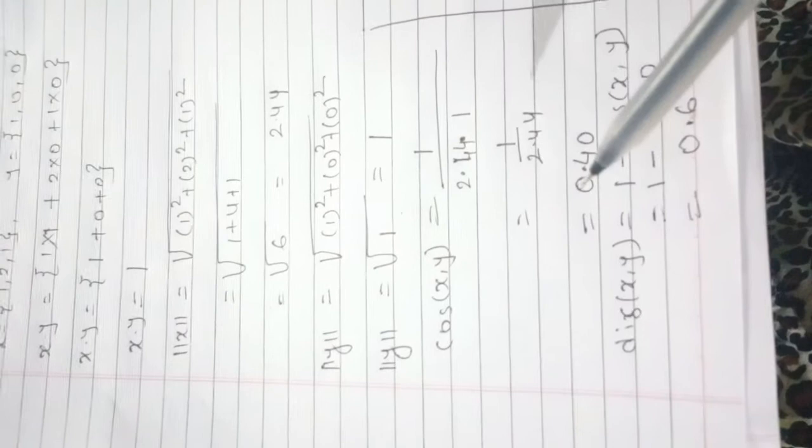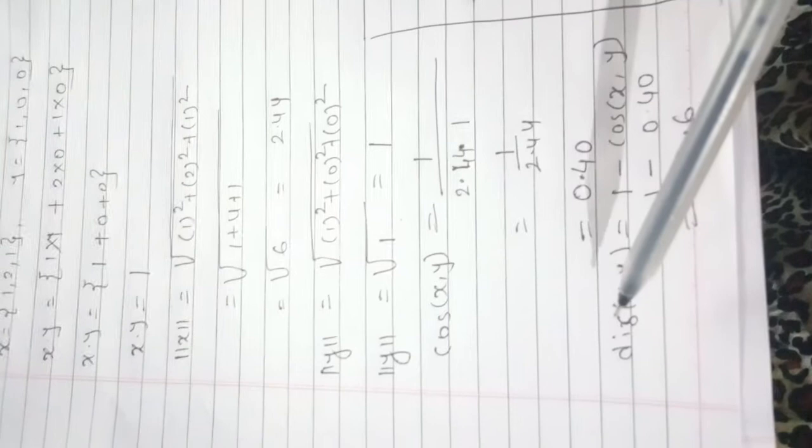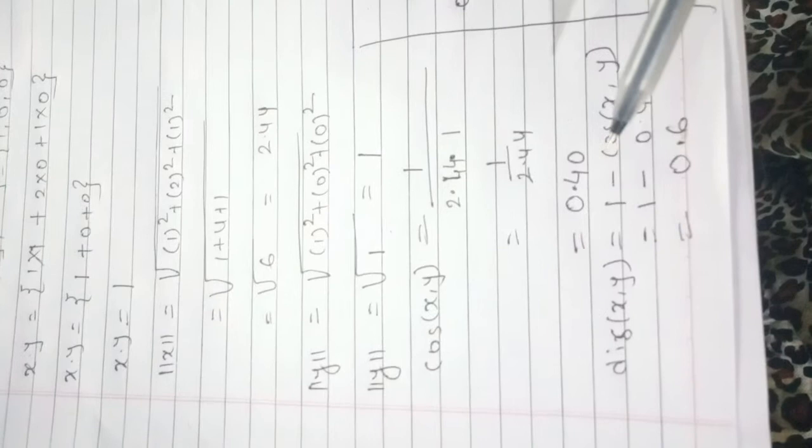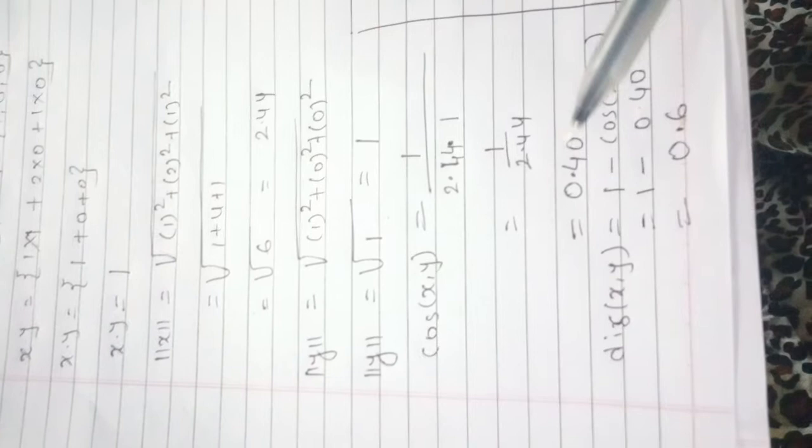Next, how to find out the dissimilarity between two vectors? The formula is 1 minus cos(x, y). So 1 minus our cos(x, y) is 0.40, and we will get 0.6.